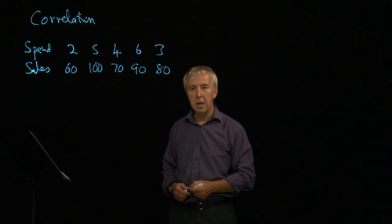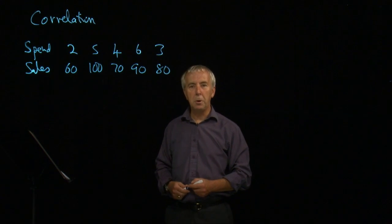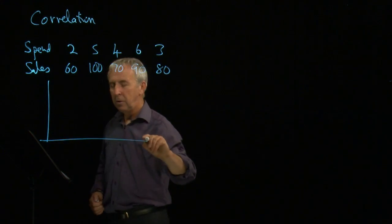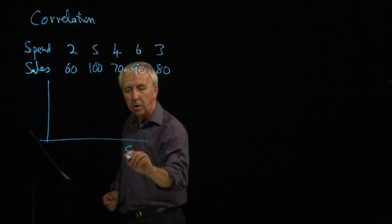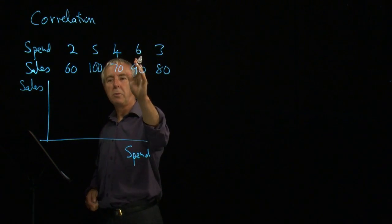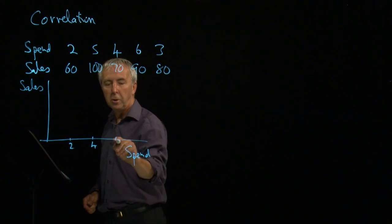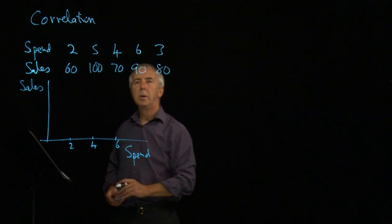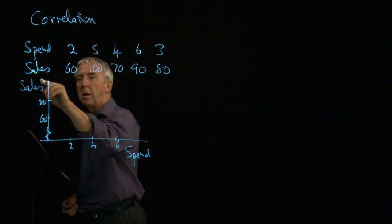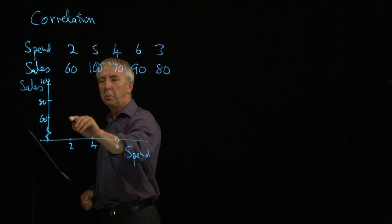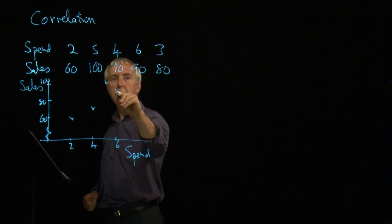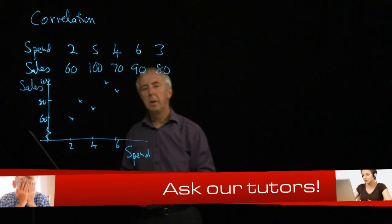One way of getting a quick idea about whether this is true is to draw a scatter diagram — a diagram of one variable against the other. We put the advertising spend along the horizontal axis and the sales up the vertical axis. The advertising spend goes up to a maximum of 6, so we mark 2, 4, 6. The sales goes from 60 up to 100, so we mark 60, 80, and 100. Plotting the points: spend 2 gives sales 60; spend 5 gives 100; spend 4 gives 70; spend 6 gives 90; spend 3 gives 80.